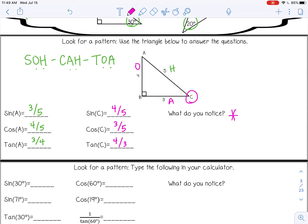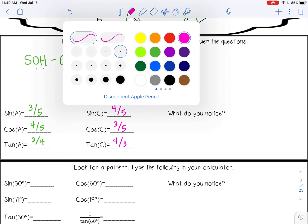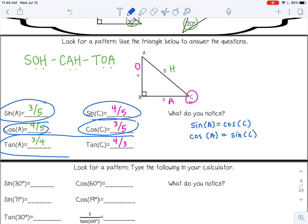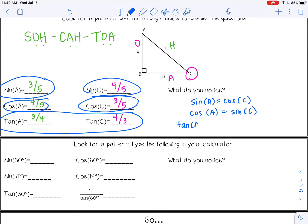Okay, so you should have noticed a few patterns. First of all, you should have noticed that the sine of A and the cosine of C were equal. And also, the cosine of A and the sine of C were equal. And then the last thing you should have noticed is for my tangent ratios, they are reciprocals, which just means a flipped fraction. So the ratio for the tangent of A and the ratio for the tangent of C are reciprocals.